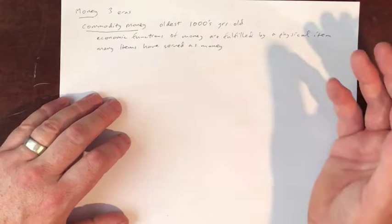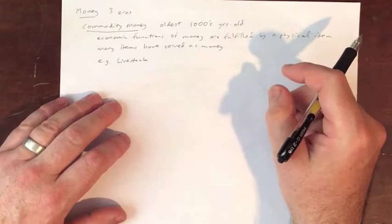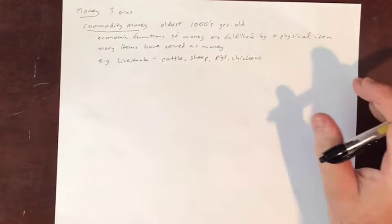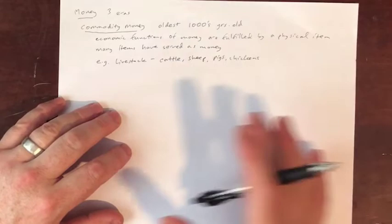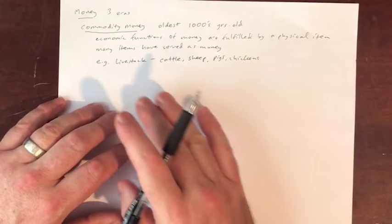Sometimes these kinds of money are actually living. Different kinds of livestock have been used as money historically — cattle, sheep, pigs, chickens. The use of cattle as money is very, very old, and sometimes products associated with cattle: hides, leather, even things like dung. So a very large category of different items.